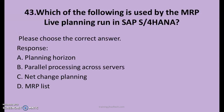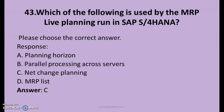43rd question. Which of the following is used by the MRP light planning run in SAP S4 HANA? A. Planning horizon, B. Parallel processing across servers, C. Net change planning, D. MRP list. The right answer is C: Net change planning.